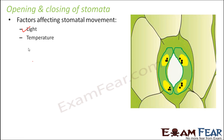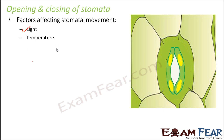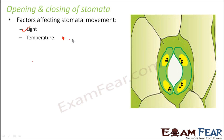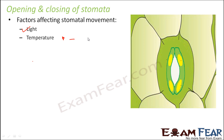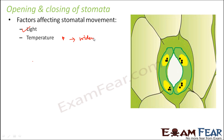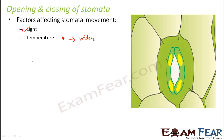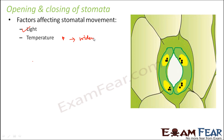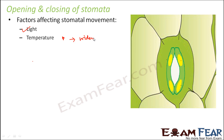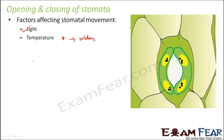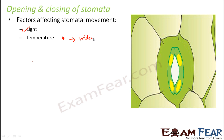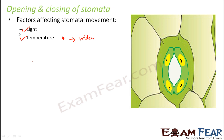Next is temperature. Temperature is directly proportional to the size of the stomatal pore — when temperature increases, the pores become wider and the stomata opens; when temperature decreases, the pores tend to close. However, in some plants, stomata open even in darkness because if the temperature is increased sufficiently, the stomata can open even without light.